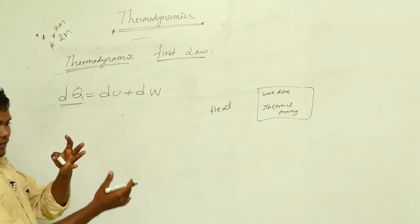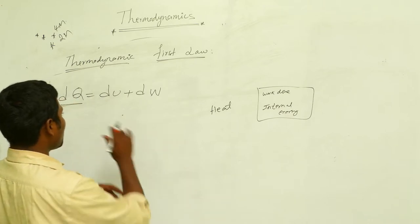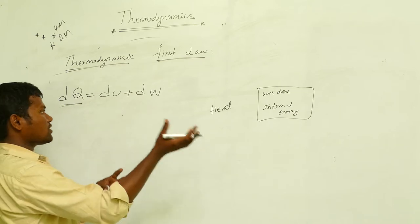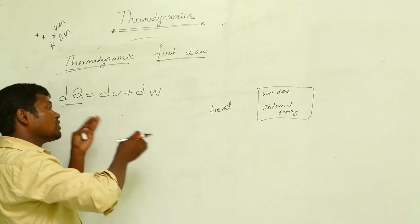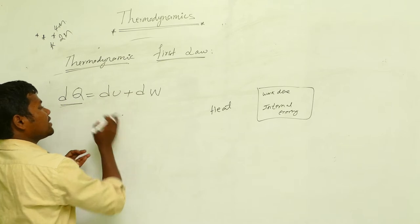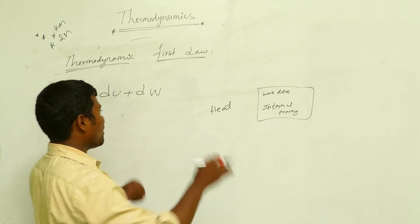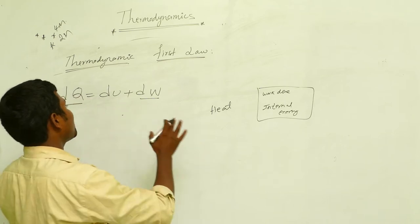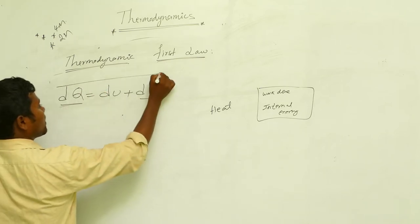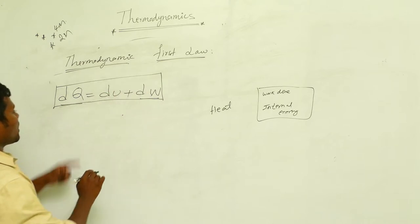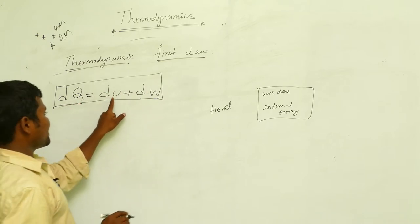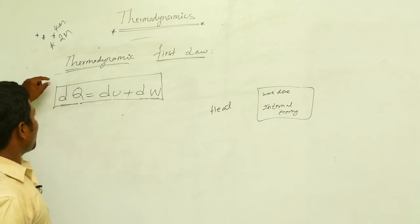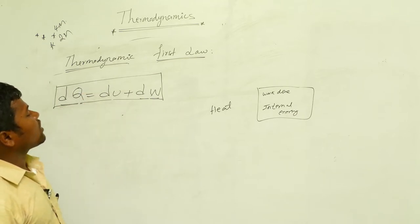DQ is the heat we are giving to that system. Suppose you are applying some energy to one system — some energy is going in the form of internal energy, and some energy is going in the form of work done by the system. This law we are calling the first law of thermodynamics. DQ is the heat, DU is the internal energy, and DW is the work done.